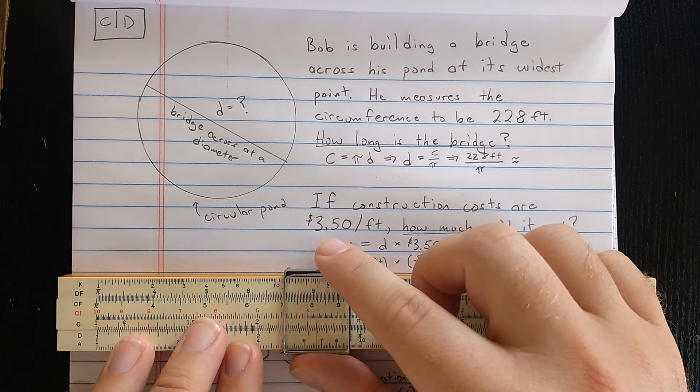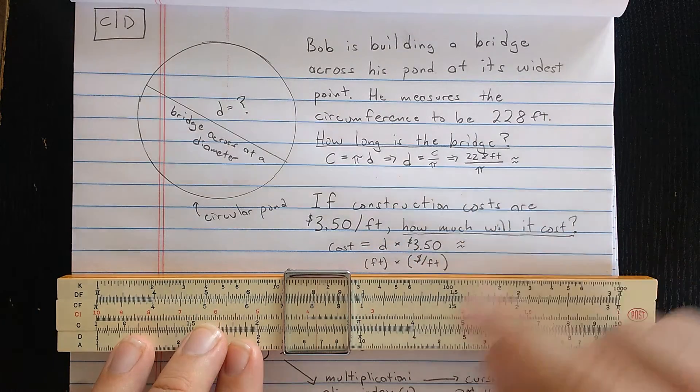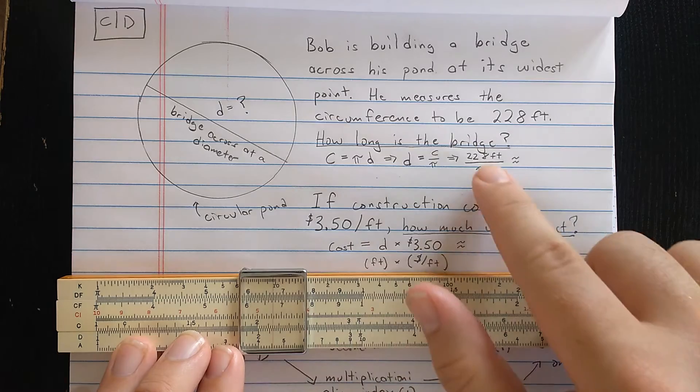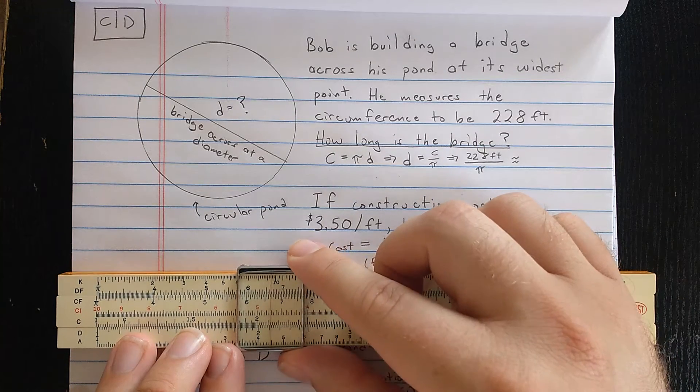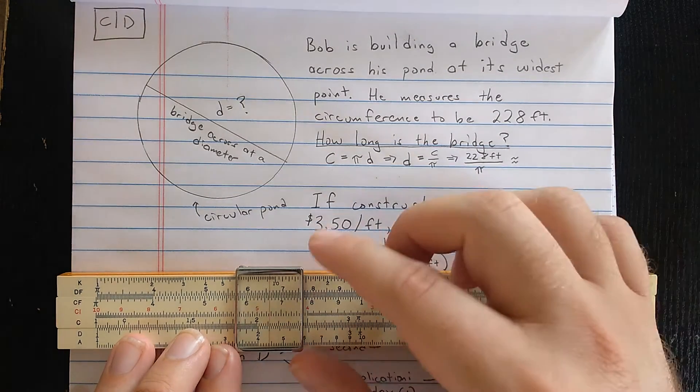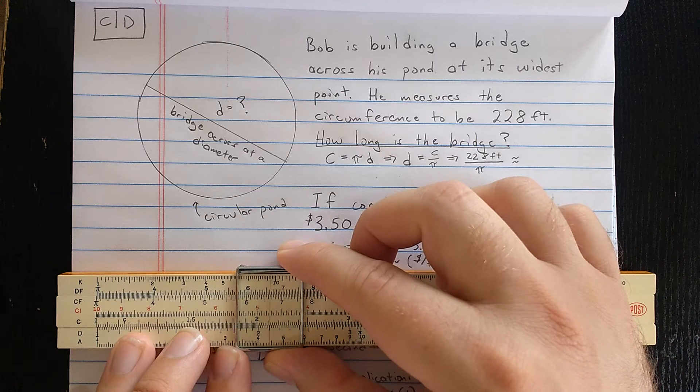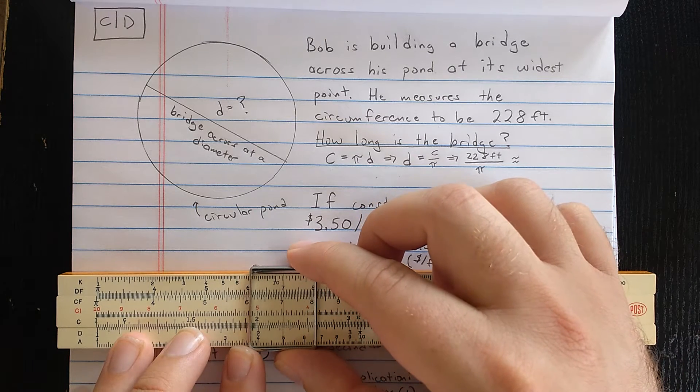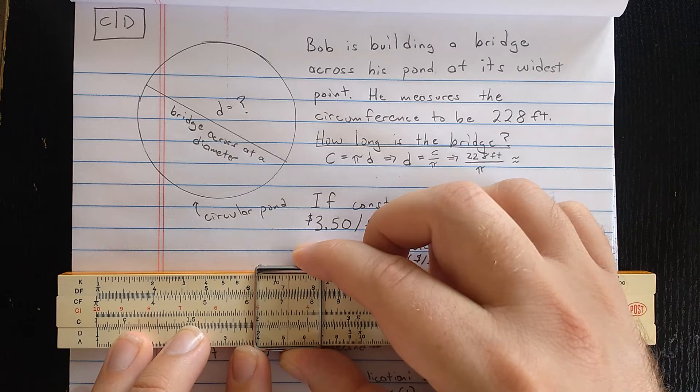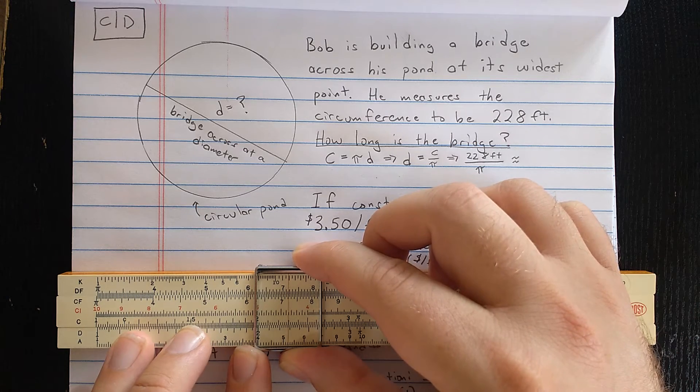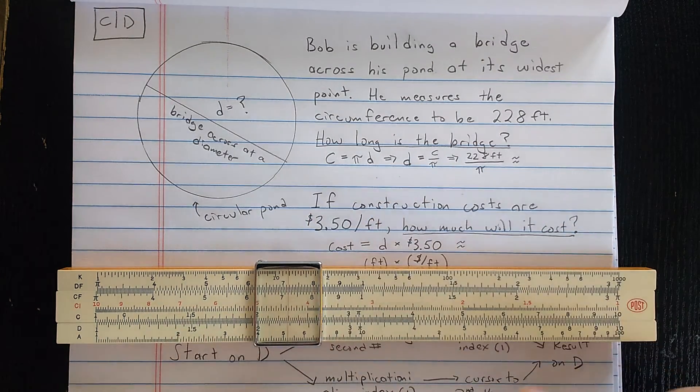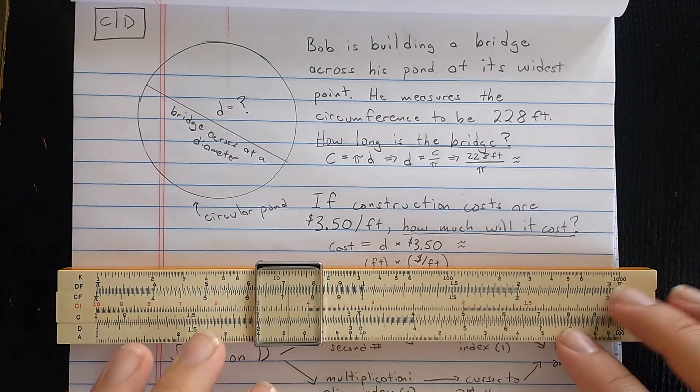Okay, so to divide, I will first find 228 on the D scale. Of course, I ignore the order of magnitude. So what I really find is 2.28. So here's 2, 2.1, 2.2. Each of these marks in between represent 0.02. So 2.28 is right here on the D scale.